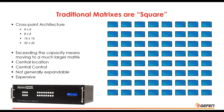Traditional matrix systems — Geffen has been in the video matrix business almost since we started. Traditional matrices are square: four by four, eight by eight, sixteen by sixteen, thirty-two by thirty-two. You're limited to the size you bought. If you have a four by four and need a fifth screen, you basically need to replace it with an eight by eight, which now has more capacity than you needed.